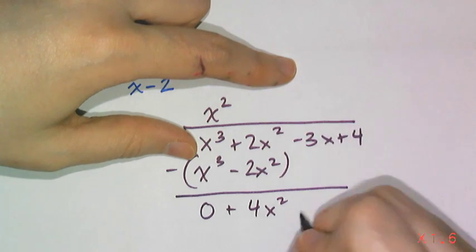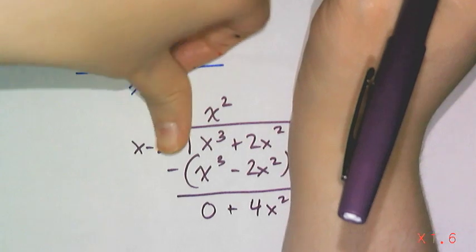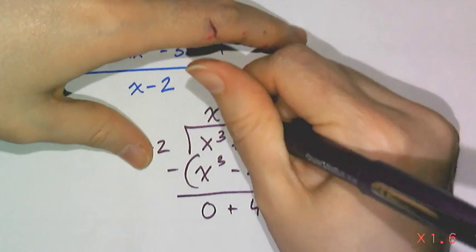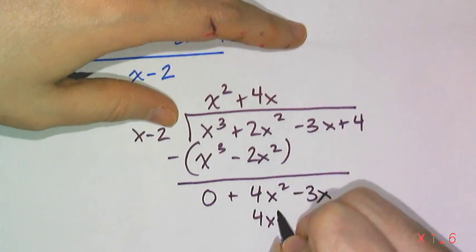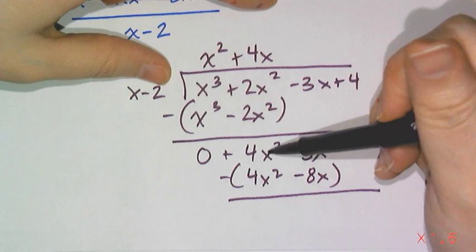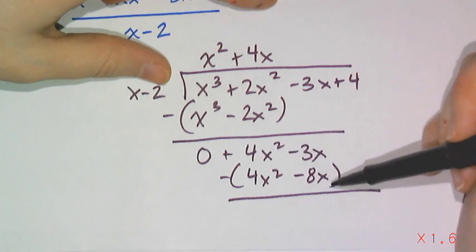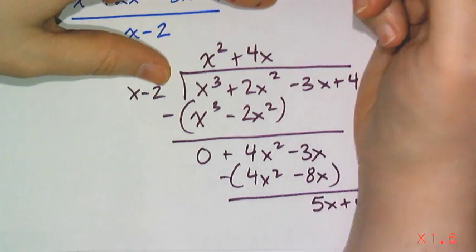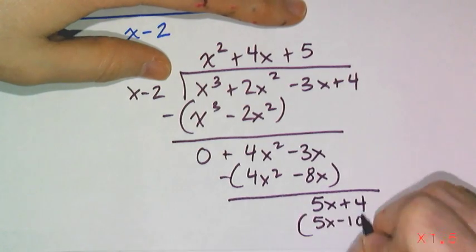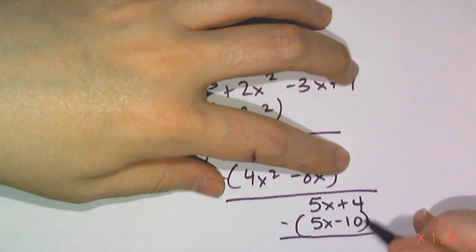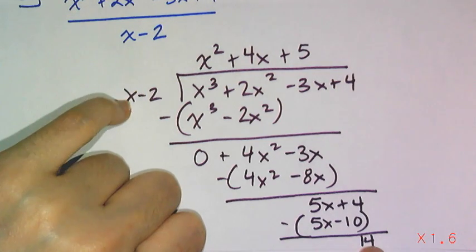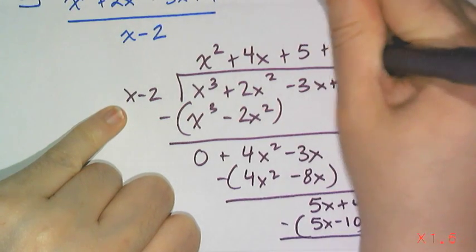I bring down the −3x. Looking at 4x² and x: what do I multiply x by to get 4x²? That's +4x. So 4x · x = 4x², and 4x · (−2) = −8x. Subtracting the whole thing: −3x minus −8x gives +5x, plus the +4 brought down. Then x into 5x gives +5; 5 · (x − 2) = 5x − 10. Subtract: 4 minus −10 is 14. Since 14 has no x term and x − 2 has a higher degree, 14 is the remainder. The answer is x² + 4x + 5 + 14/(x − 2).